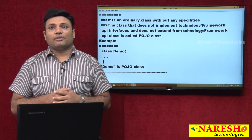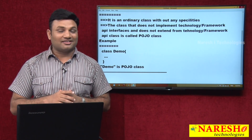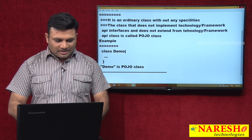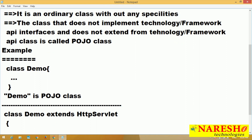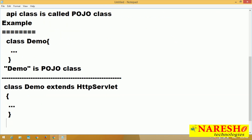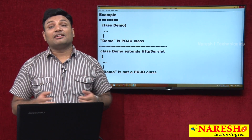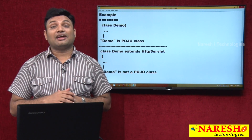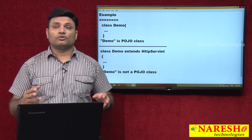It is extending from Object class. Every class's default super class is Object class. That is fine — POJO class is not against inheritance. Now let us take another example: class Demo extends HttpServlet. HttpServlet is part of the Servlet technology API. Since this class is extending from a Servlet technology API class, it is not a POJO class.